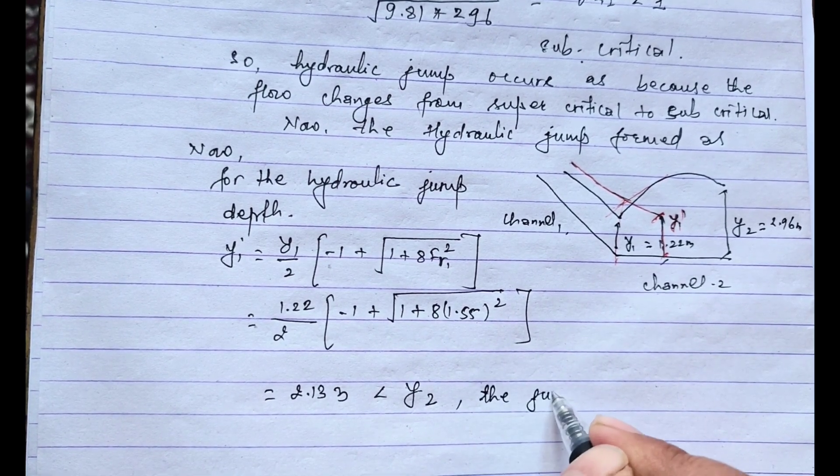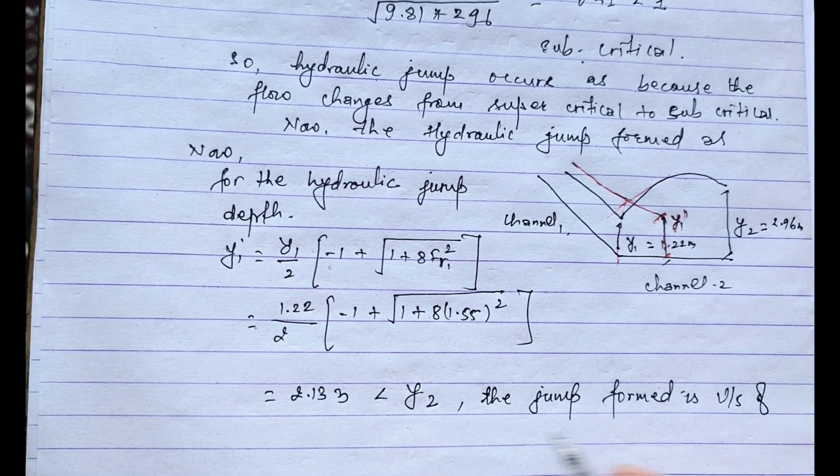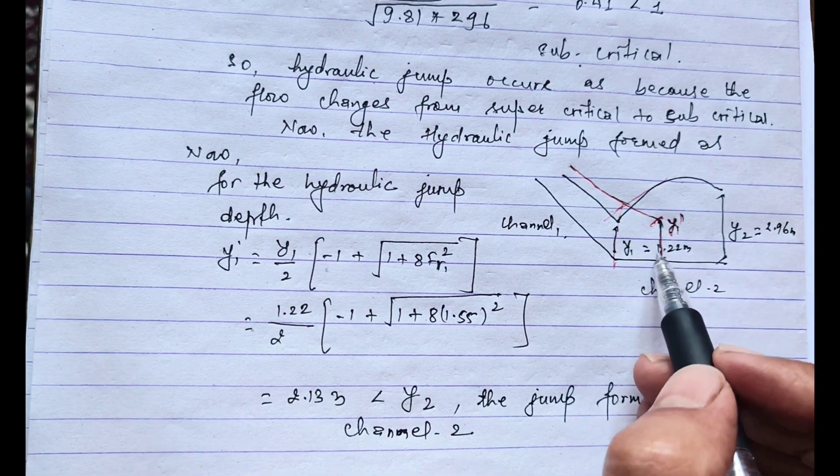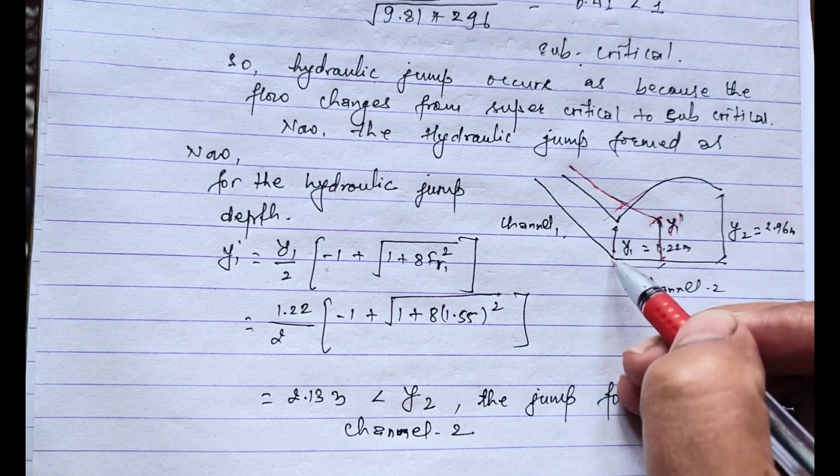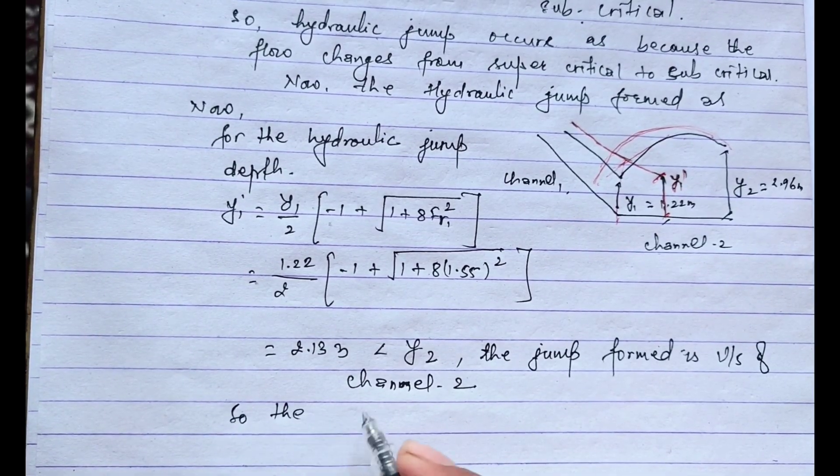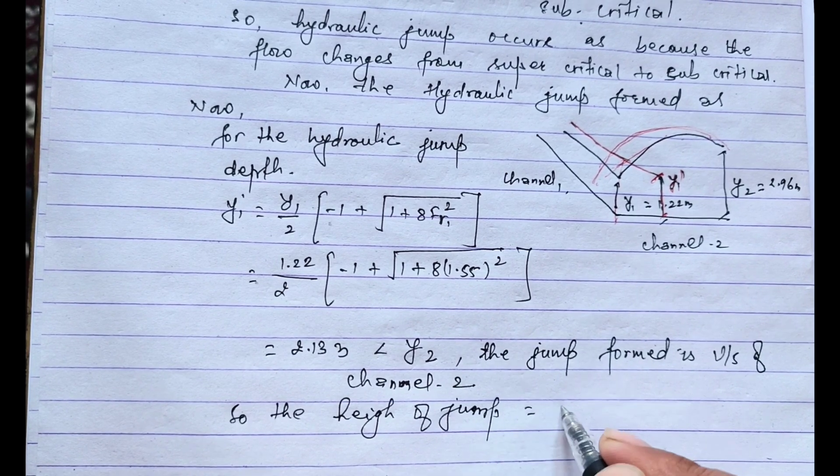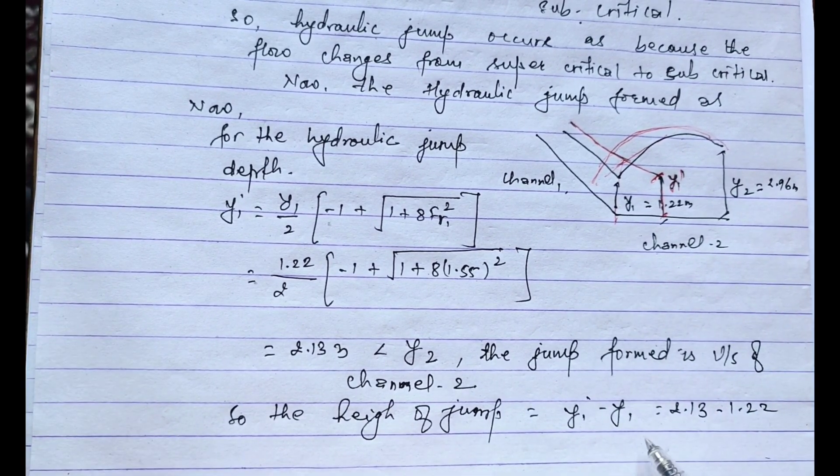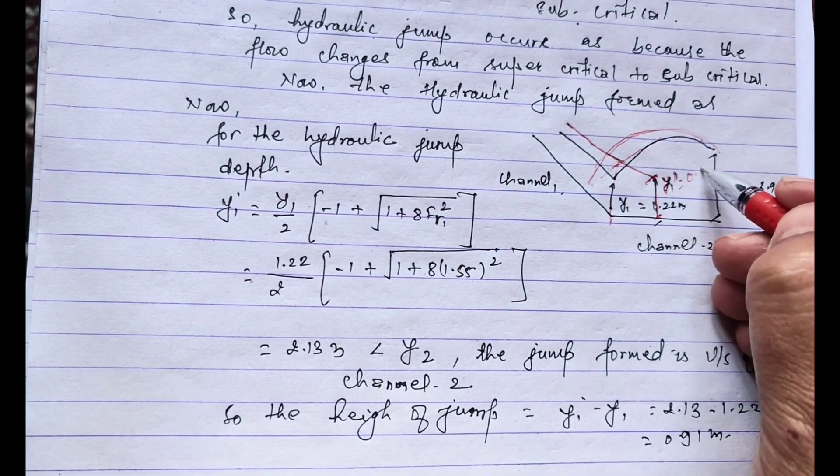The value of y1 dash is less than y2. In this condition, the jump will be formed upstream of channel 2. Now the jump will be formed over here. Y1 dash occurs at this point and the jump will occur over here. So the height of the jump equals y1 dash minus y1, equals 2.13 minus 1.22, equals 0.91 meter. That is the value of the height of the jump is 0.91 meter.